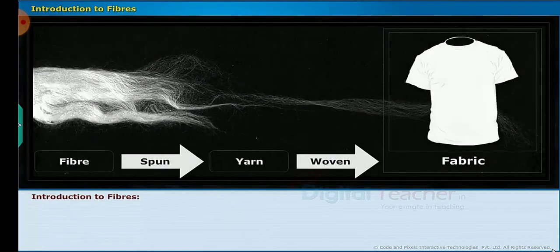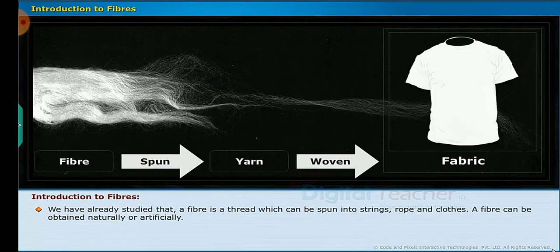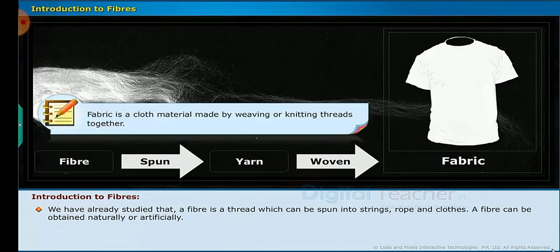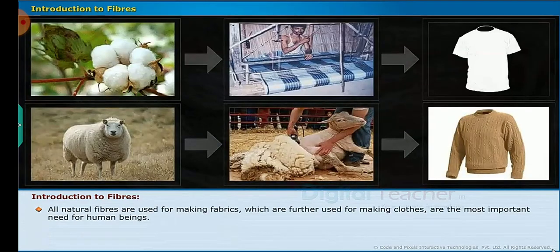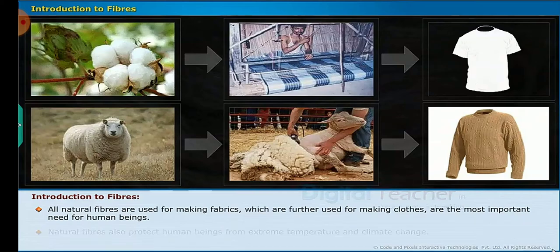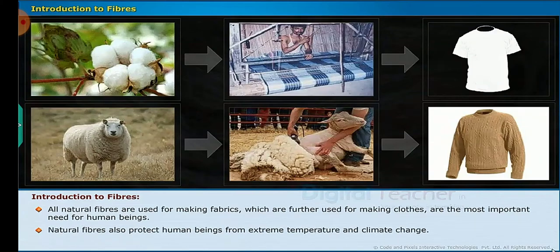Introduction to fibers: we have already studied that a fiber is a thread which can be spun into strings, rope and clothes. A fiber can be obtained naturally or artificially. Note: fabric is a cloth material made by weaving or knitting threads together. The fibers which we obtain from nature, that is from animals and plants, are called natural fibers. All natural fibers are used for making fabrics, which are further used for making clothes — the most important need for human beings. Natural fibers also protect human beings from extreme temperature and climate change.